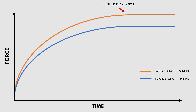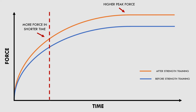Therefore, even during short time frames, the amount of force will be higher. So even though the rate hasn't improved, higher absolute strength levels will still increase the force produced at sub-maximal levels.